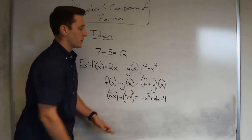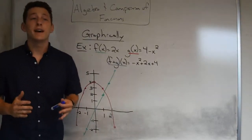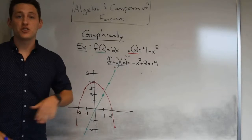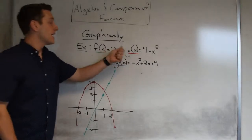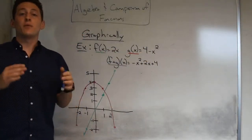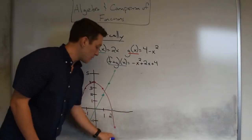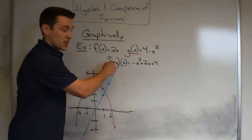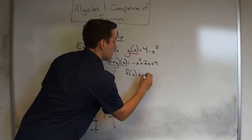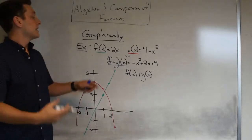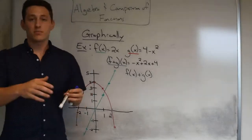Now let's talk about what (f + g)(x) means graphically. With f(x) = 2x and g(x) = 4 minus x squared, we found that their sum is negative x squared plus 2x plus 4. We got there by defining (f + g)(x) as f(x) plus g(x), substituting in at each step, combining terms, and landing on that result.